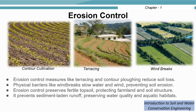These are some erosion control measures: contour cultivation, terracing, and windbreaks. In contour cultivation, crops are grown along the contours, which helps reduce the speed of surface runoff and thereby reduce soil loss. In terracing, hilly land is converted into bench-like platforms, conserving soil and water. Windbreaks are physical barriers along the perimeter of a field that slow down wind speed and reduce soil erosion. These measures preserve the fertile topsoil, protect farmland and soil structure, prevent sediment-laden runoff, and preserve water quality and aquatic habitats.